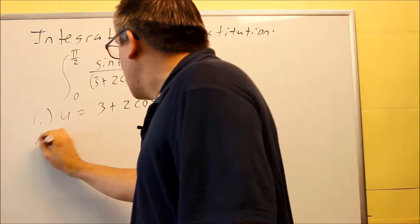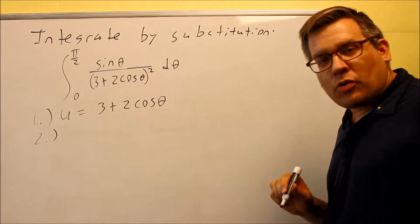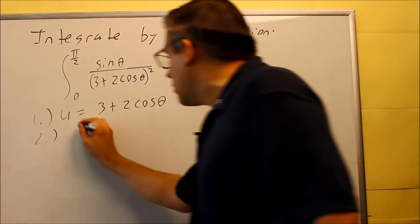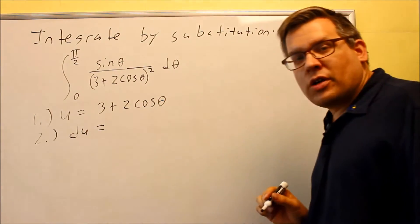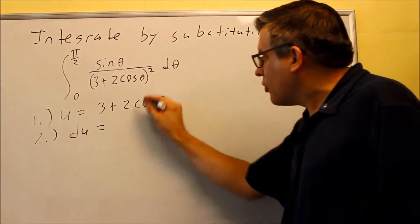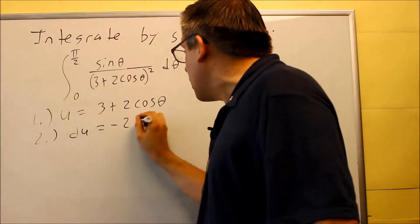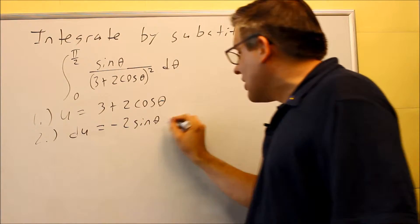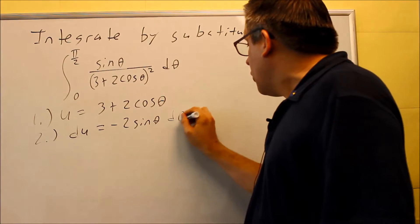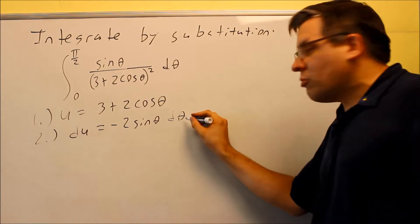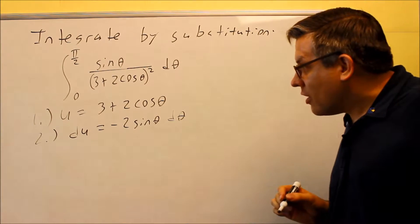For step number 2, you're going to take the derivative of both sides, so you're going to get du. The derivative of 3 is 0. The derivative of cosine is negative sine, so we'll get negative 2 sine theta. Since theta is our variable, we've got to make sure this one matches, so you won't have dx here — it'll be d theta.